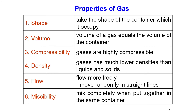The properties of gas: first, it takes the shape of the container — if placed in a cube-shaped container it forms a cube, if placed in a spherical container it forms a sphere. Second, the volume of a gas equals the volume of the container. Third, compressibility — gases are highly compressible. Fourth, density — gases have much lower densities compared to liquids and solids. Fifth, gases flow more freely and can move randomly in straight lines. Sixth, miscibility — gases mix completely when put together in the same container.